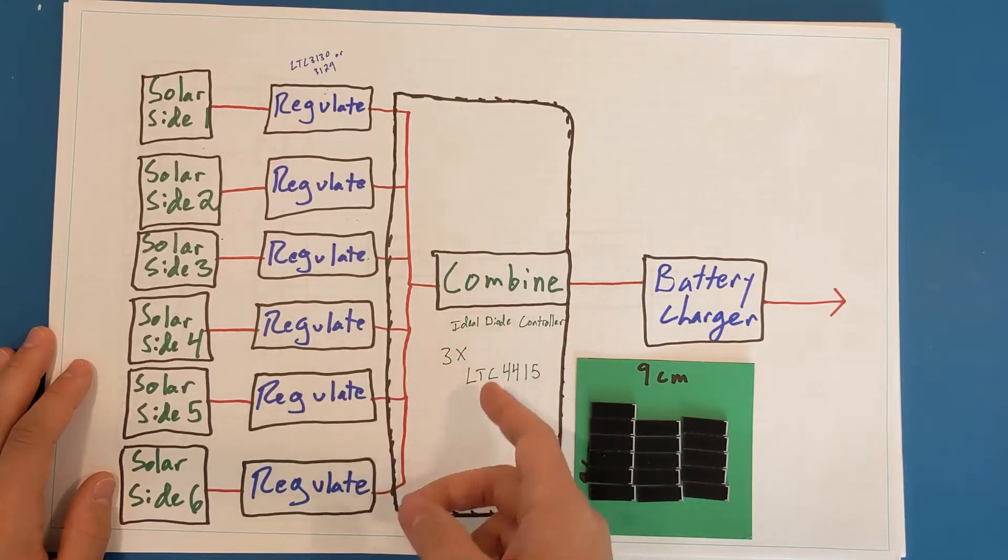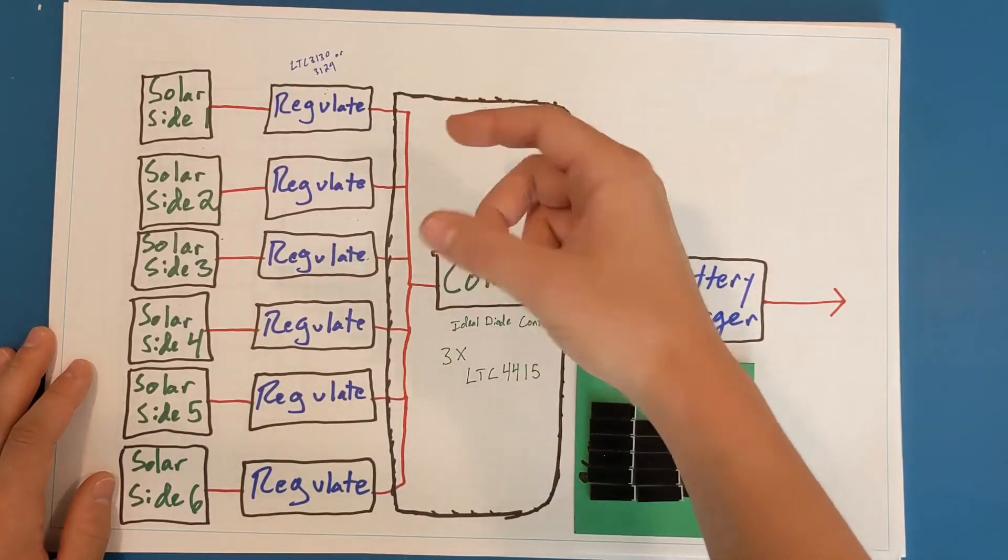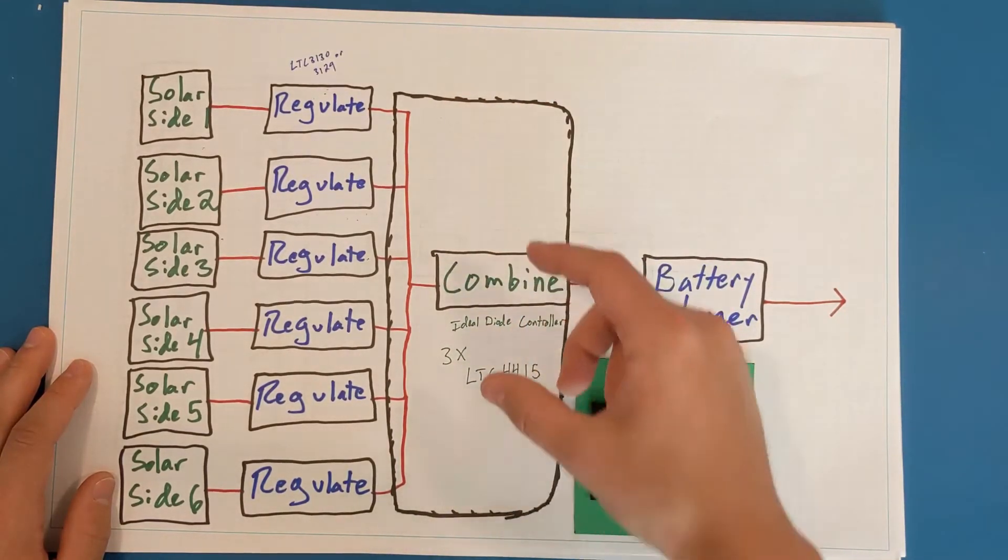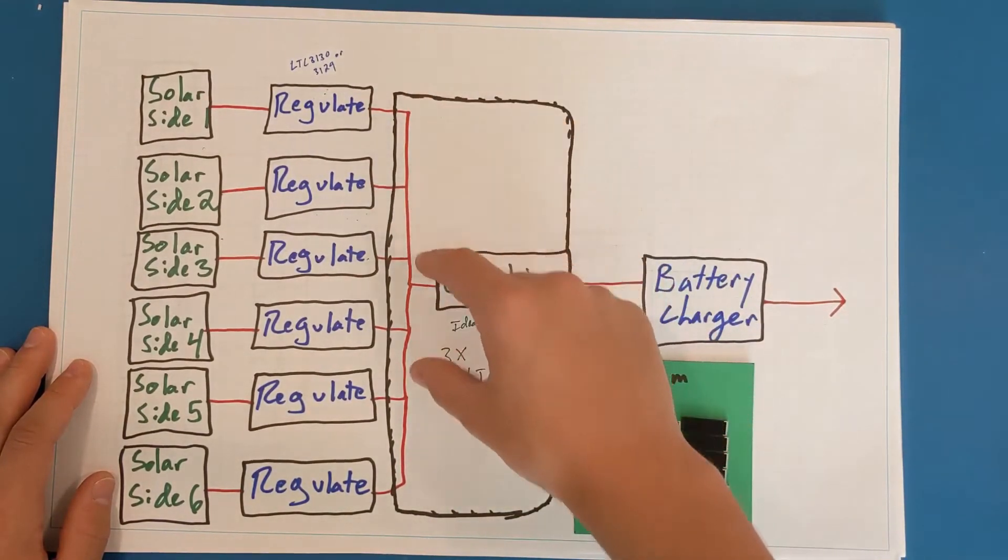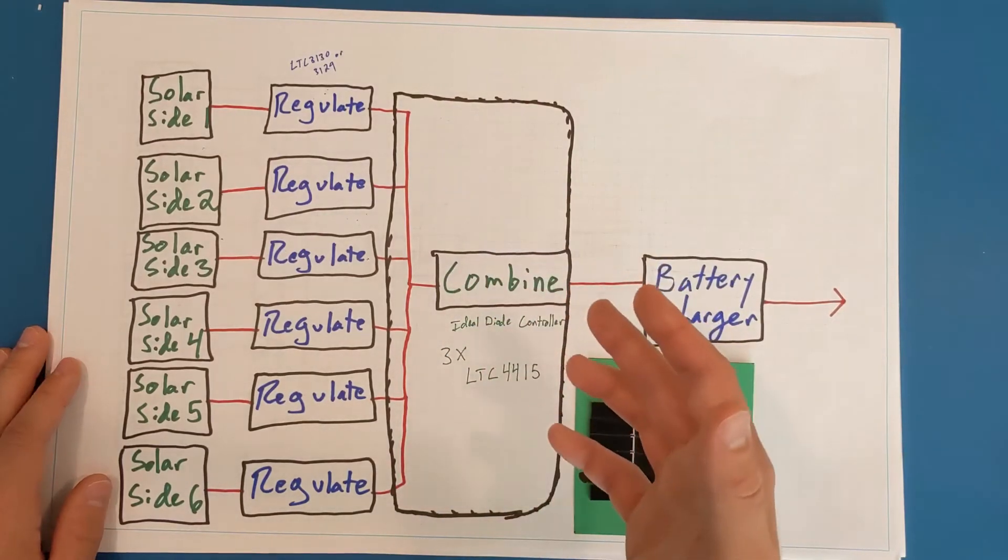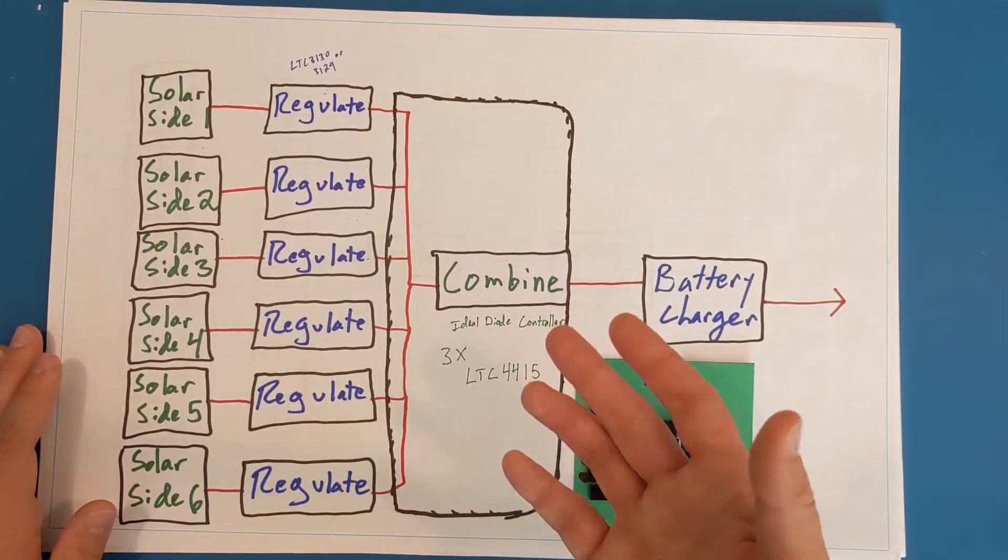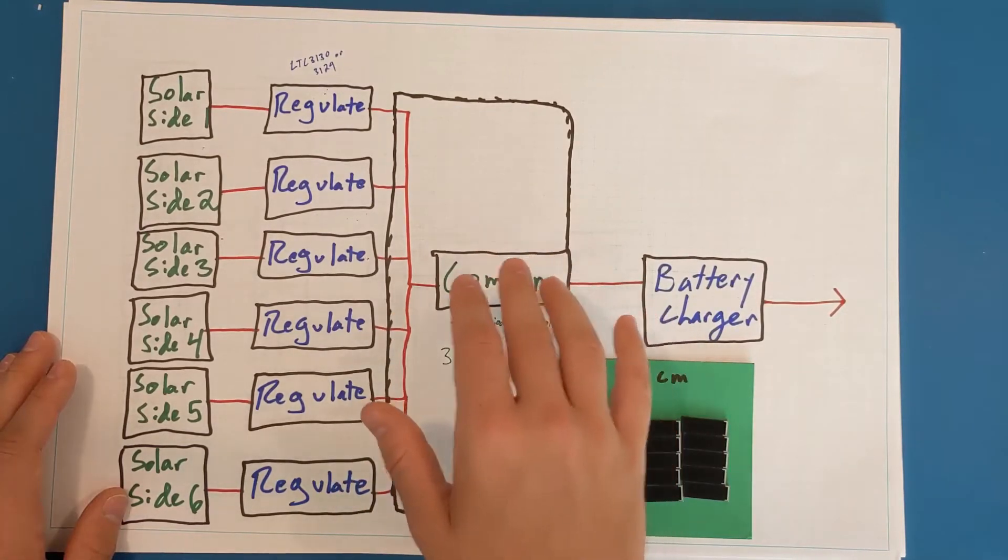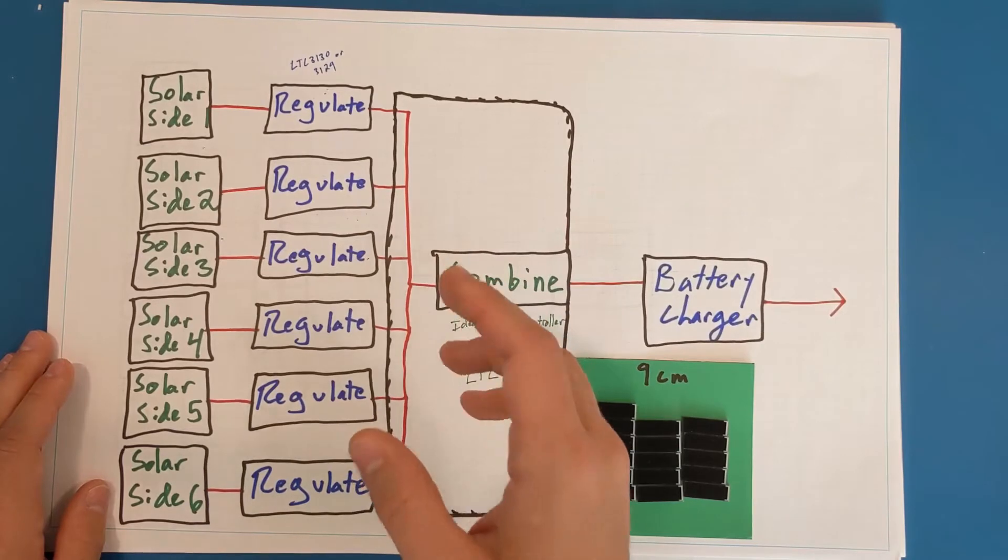The ideal diode controller, the LTC4415, I would need three of them since this is a dual input chip. I'd have one here, here, and here. Again, these are $7 parts, still not that expensive, but I have to have three of them. I think that there is a better layout to better optimize board space and cost.